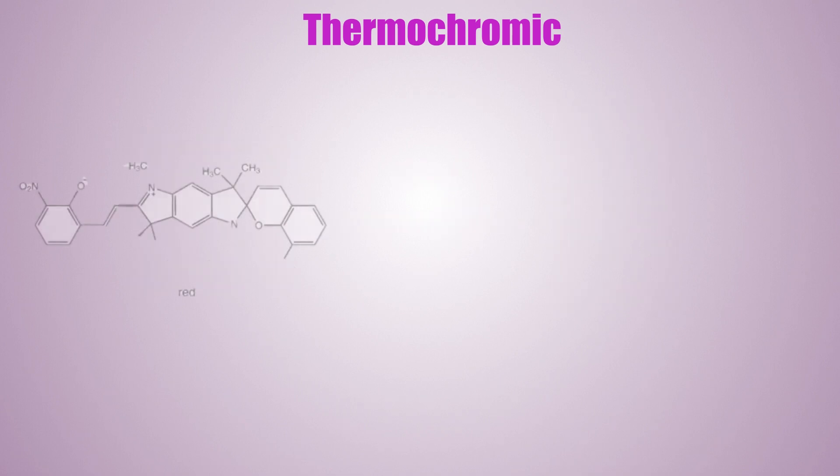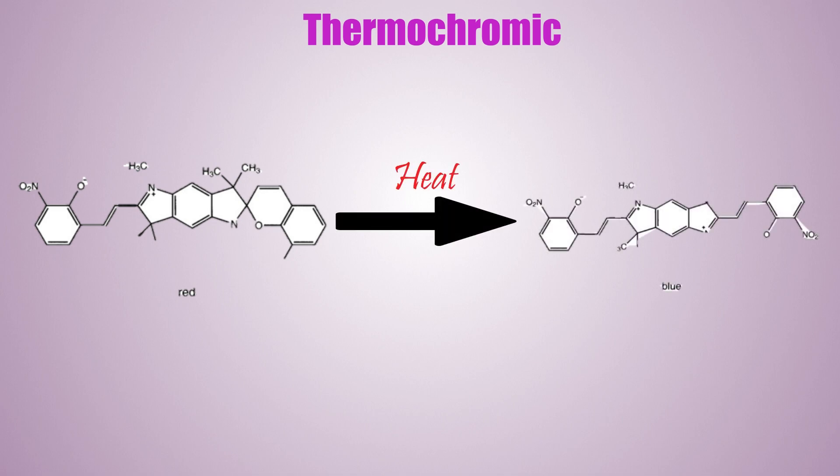The bonds of thermochromic material also play a part in color change. An example is pyropyrans. At room temperature, when heat is applied, some rings break their covalent bonds causing them to open up, turning the material from red to blue.